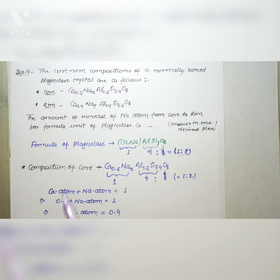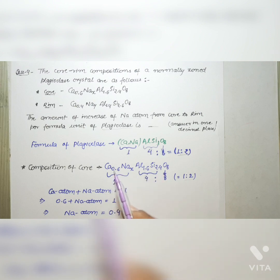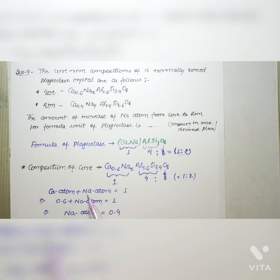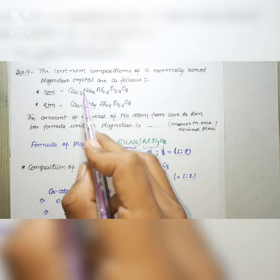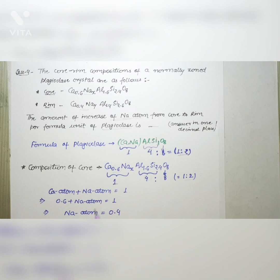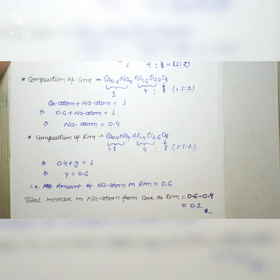In the core composition Ca₀.₆NaₓAl₁.₆Si₂.₄O₈, the ratio is satisfied since 1.6 + 2.4 = 4. Since Ca + Na = 1 and Ca = 0.6, the sodium amount in the core is 0.4. Similarly, for the rim Ca₀.₄NaᵧAl₁.₄Si₂.₆O₈, since Ca + Na = 1 and Ca = 0.4, the sodium amount in the rim is 0.6.